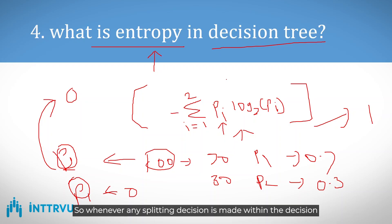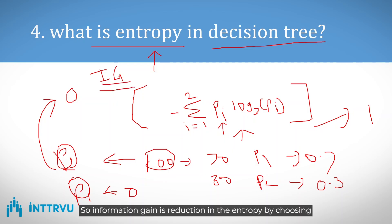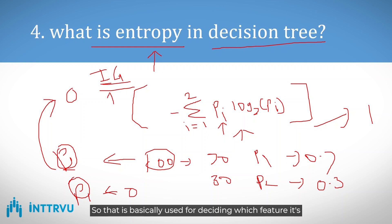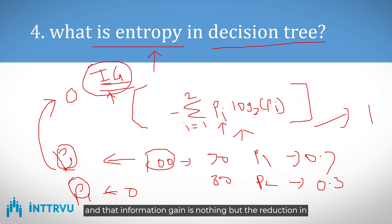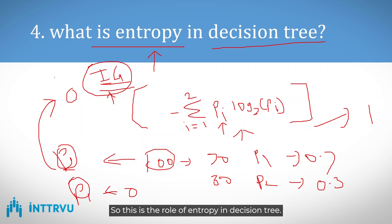Entropy is used for splitting decisions in a decision tree — the feature which reduces impurity the most is chosen. This is calculated using information gain, which is the reduction in entropy achieved by choosing a particular feature for splitting a node. The feature giving the best information gain is selected for splitting.